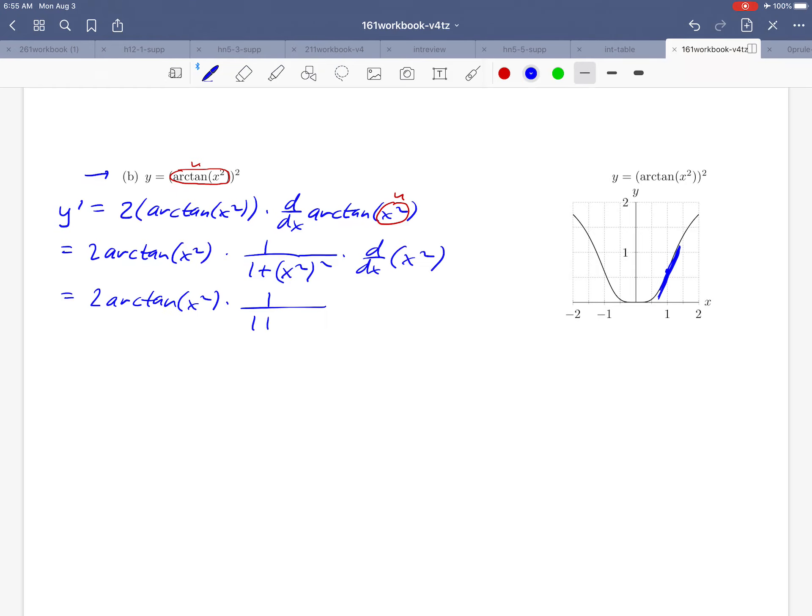One more step and we'll have our derivative. 1 over 1 plus an x squared squared is x to the fourth, so we'll simplify that. And then the derivative of x squared by the power rule is just 2x. There's our formula for the derivative.